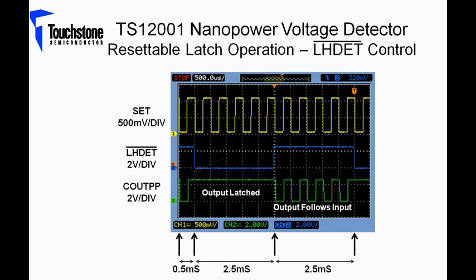However, when LH detect toggles from high to low, the output is latched to a high state from 0.5 ms to 3 ms and then from 5.5 ms to 6 ms.